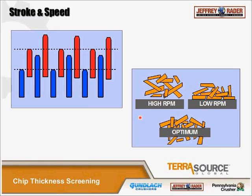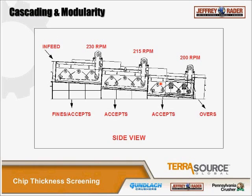Stroke and speed on the bar screen are important. The stroke is the range of motion the bars take. All the red ones operate together, all the blue ones together, giving a definite cascade effect for chips to pass through and get sorted. Speed is important — if the screen runs too fast with lightly loaded material, chips bounce on the deck and don't screen well. Too slow, chips slide down with little agitation. We pick the speed so that with the loading on the screen, agitation is optimized.